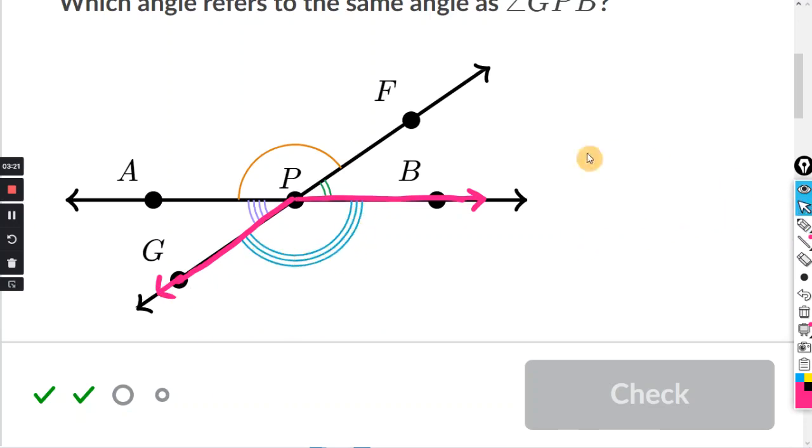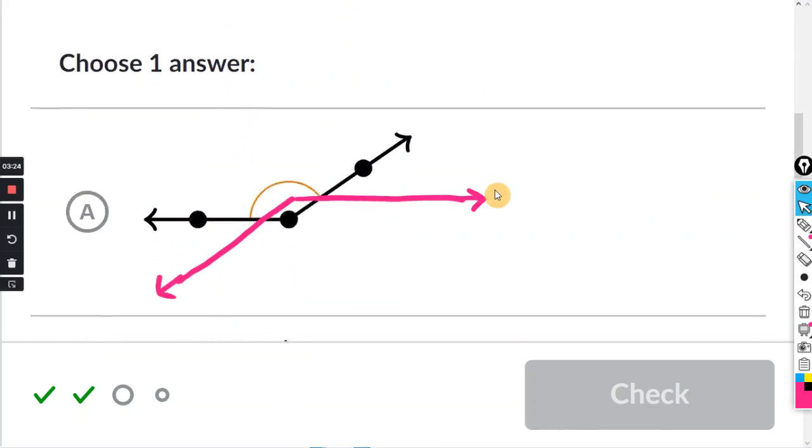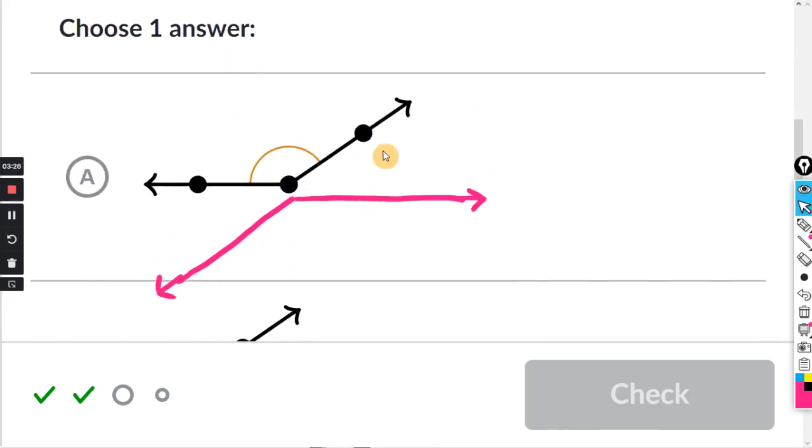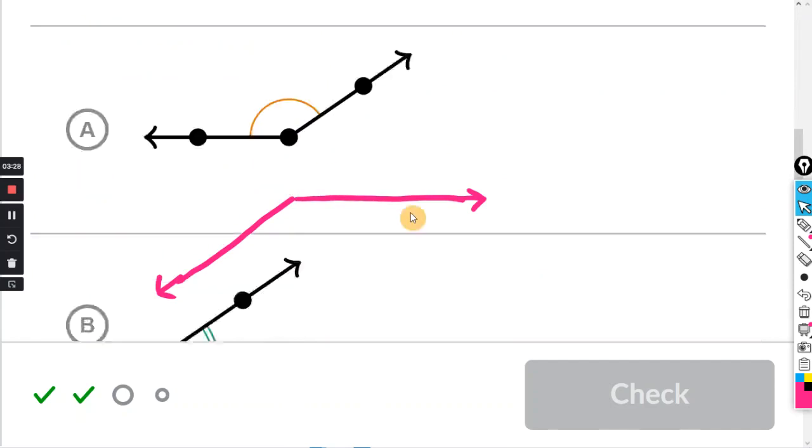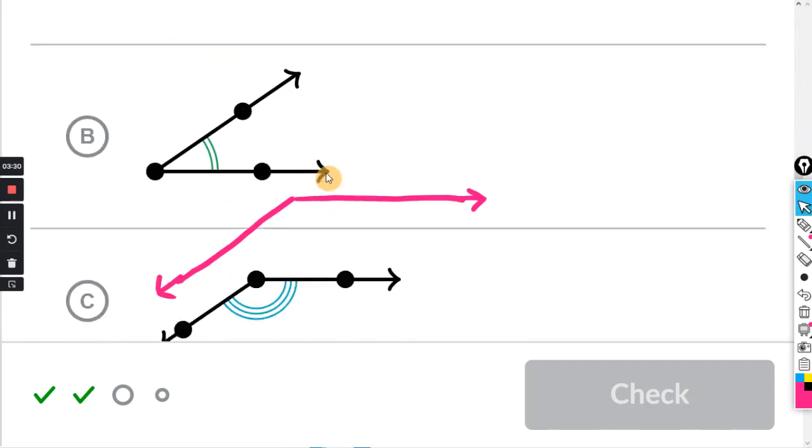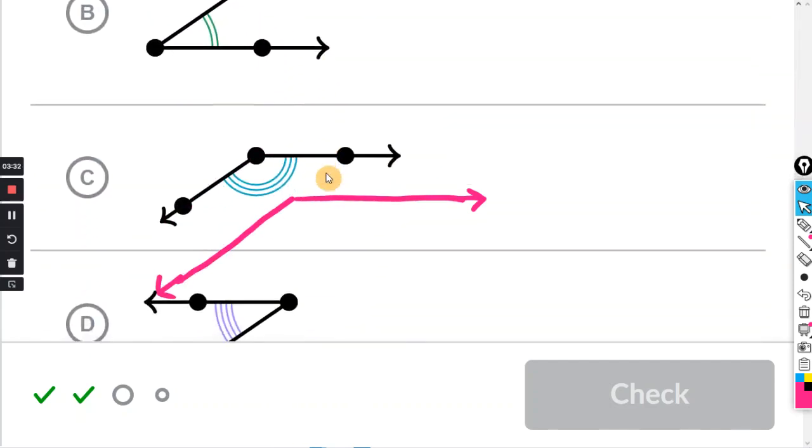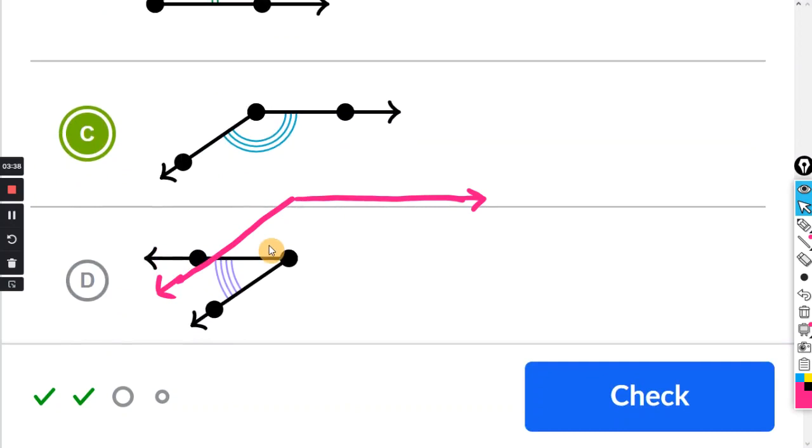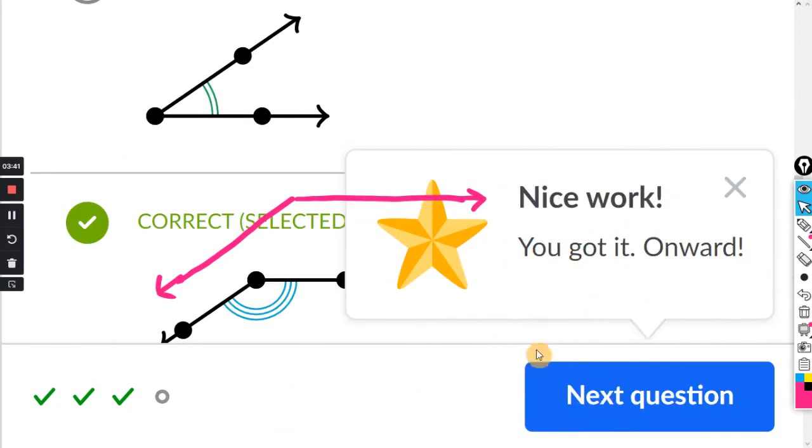So answer A only has the one mark. Answer B has two. And answer C matches what I drew in pink. And it has the three marks. So it's definitely answer C. It's not D.